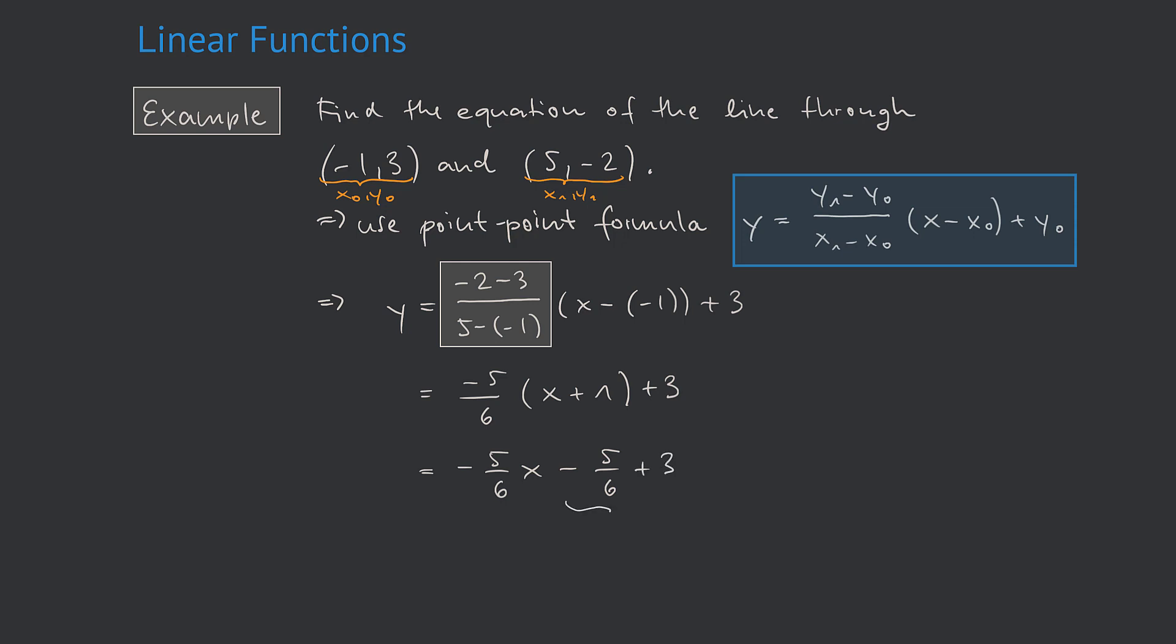I want to combine those two, which gives minus 5 over 6 x minus 5 over 6. Now 3 is 18 over 6, and this simplifies to minus 5 over 6 x plus 13 over 6.